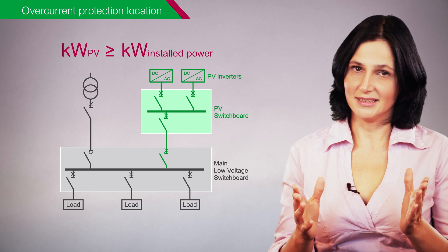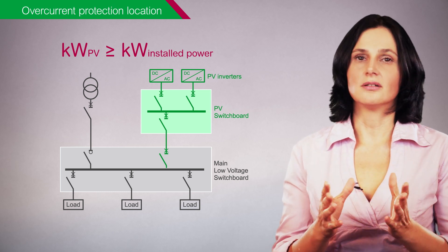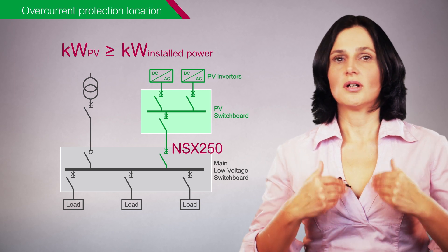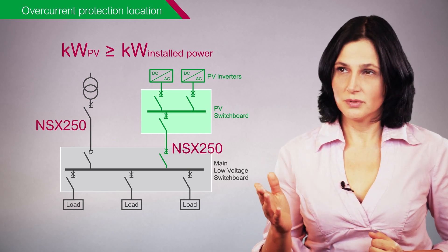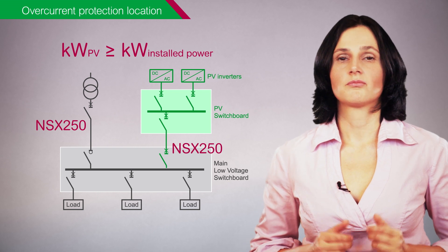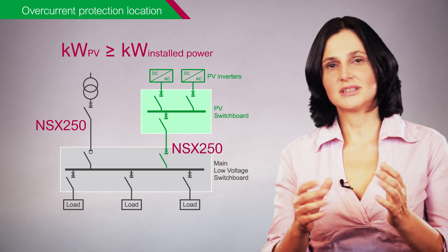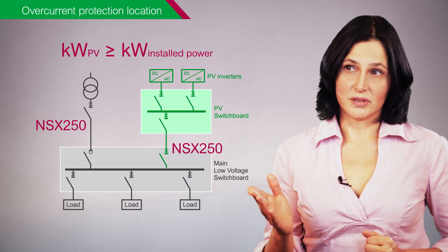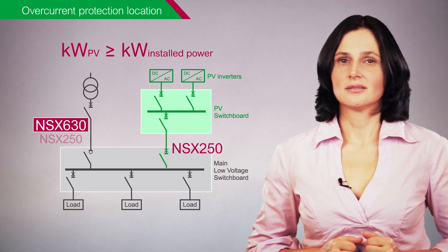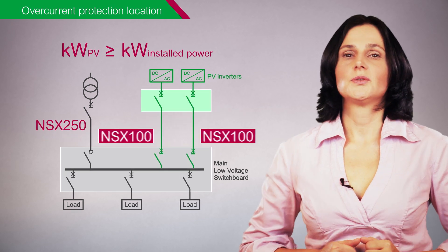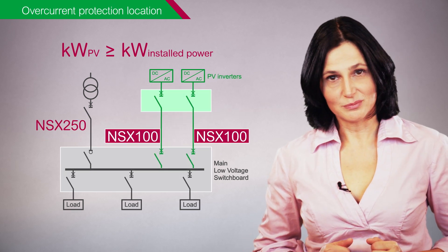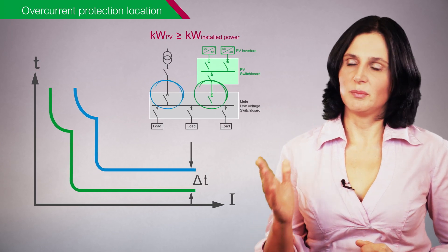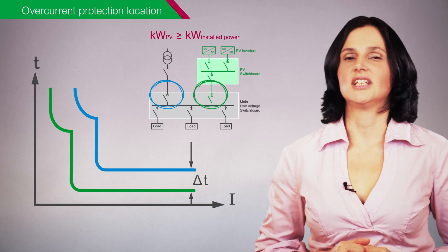In this case, the circuit breaker at the photovoltaic incomer has the same rating or higher than the main circuit breaker, as shown in this example. Thus, to ensure selectivity between the two breakers, you may oversize the main circuit breaker, or split the photovoltaic system into smaller systems, or consider time selectivity for applications higher than 630 amps.